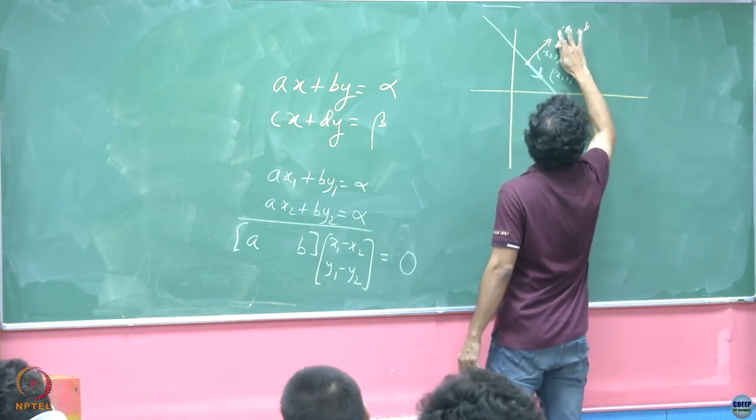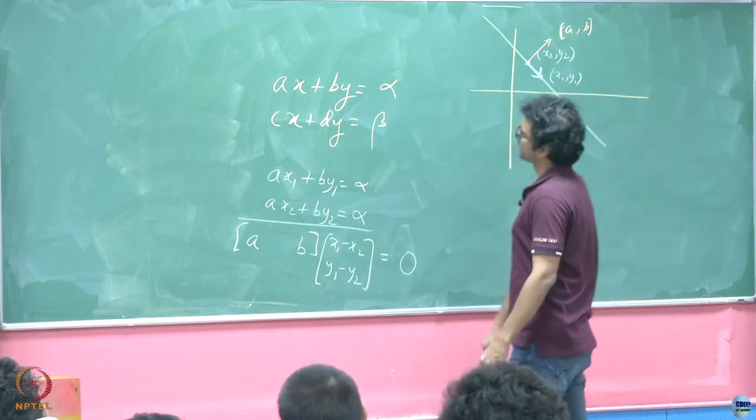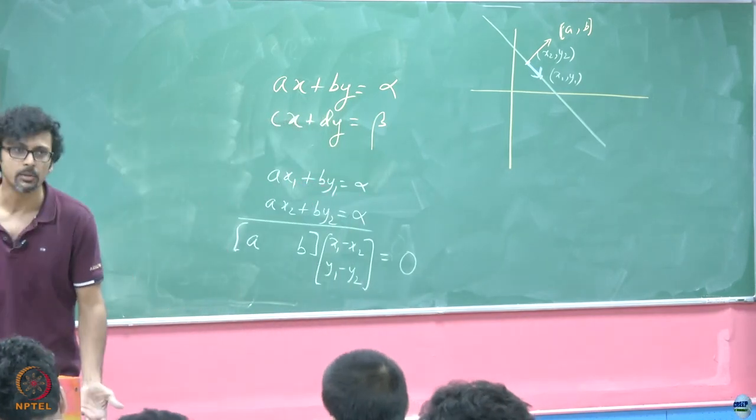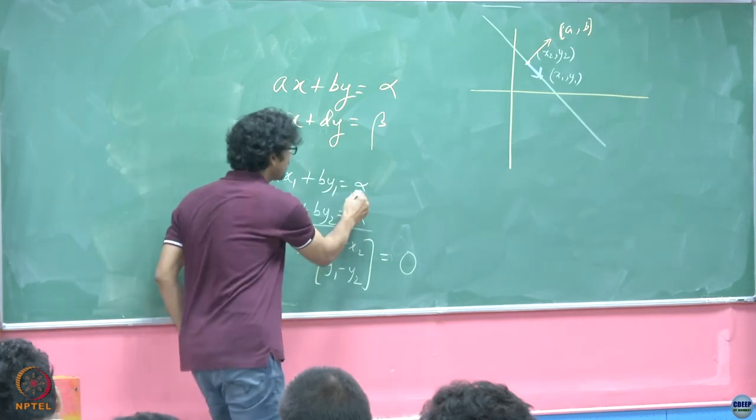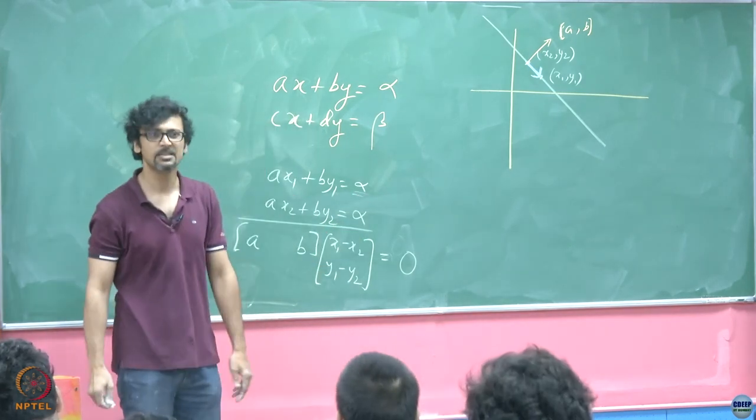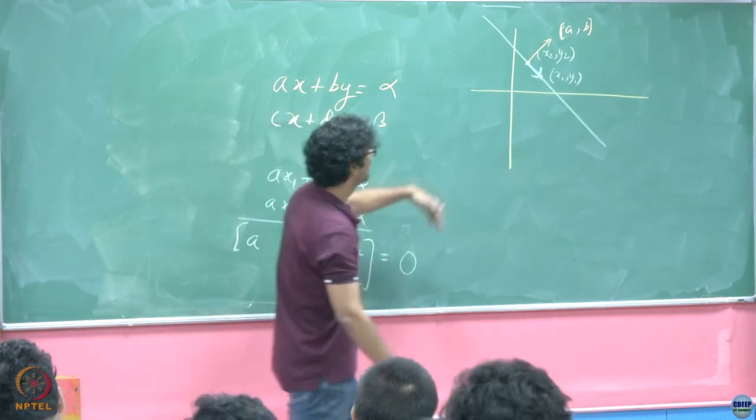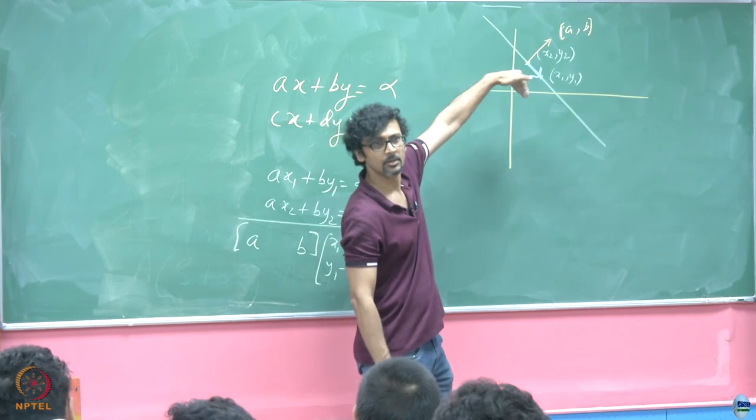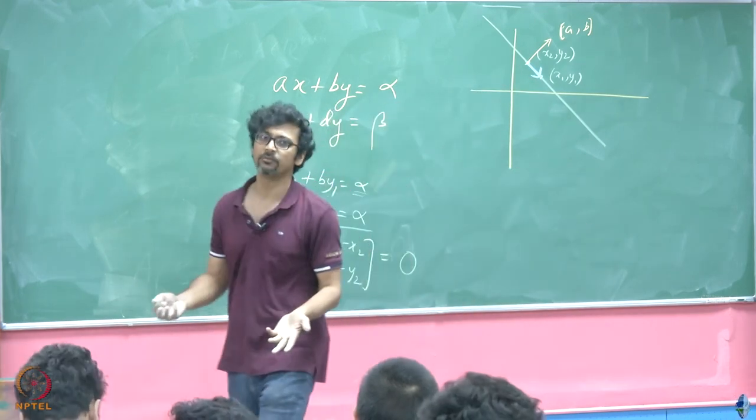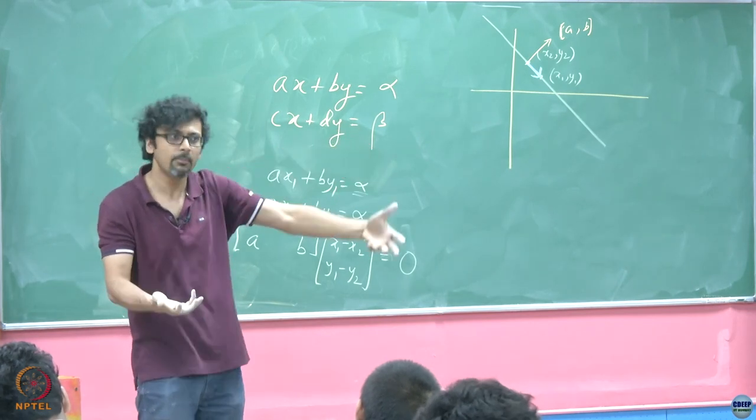If I am saying that this AB vector is orthogonal to this vector, what must be its direction? Perpendicular to that line. So this is the direction AB. In other words, the coefficients are always giving me the normals and what is that right hand side giving me, this alpha? It is a bias.